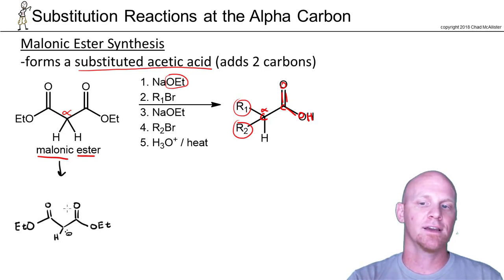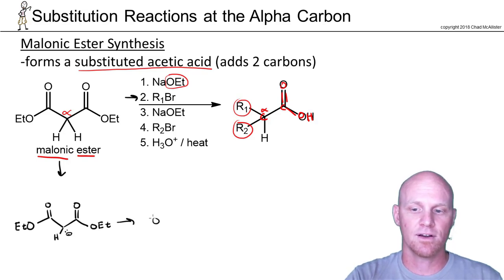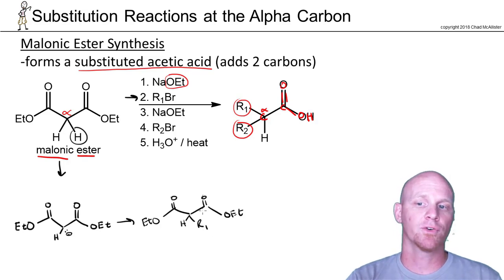You form this enolate ion, and then you react it with your first alkyl halide. In this case, as long as that alkyl halide is a good substrate for SN2, that's the key here. Now we will have replaced that hydrogen that was originally there right here with that first R group.